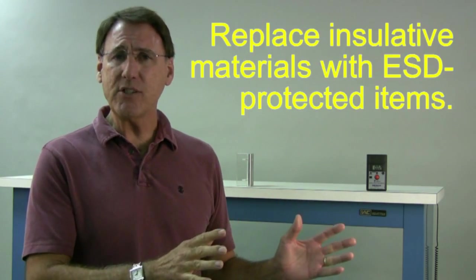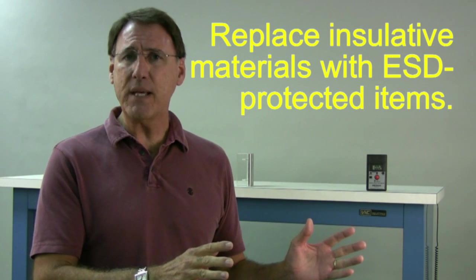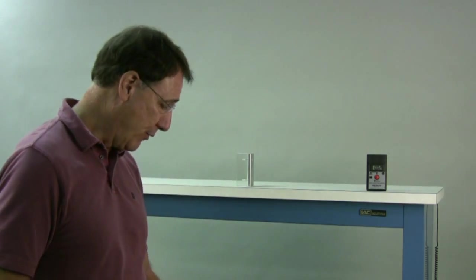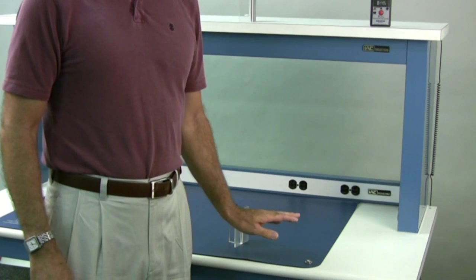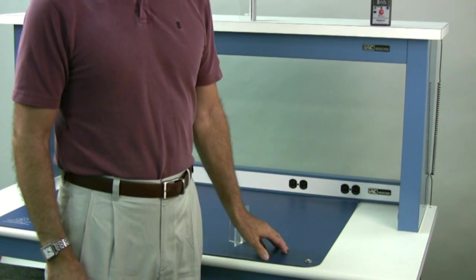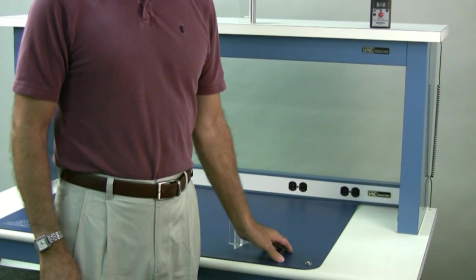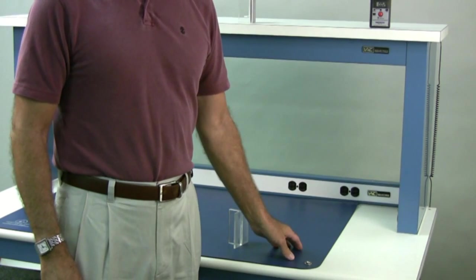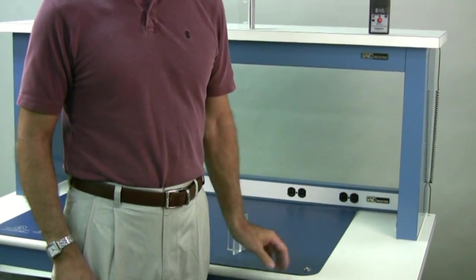The other thing you can do is to replace your insulative version of whatever the item is in your production facility with an ESD protective version. So like, for example, this matting, most matting are insulative, but this is a stat-free T2 mat that we sell.